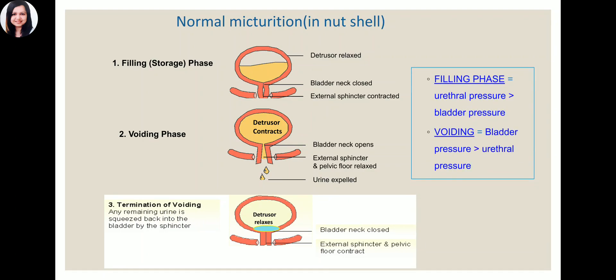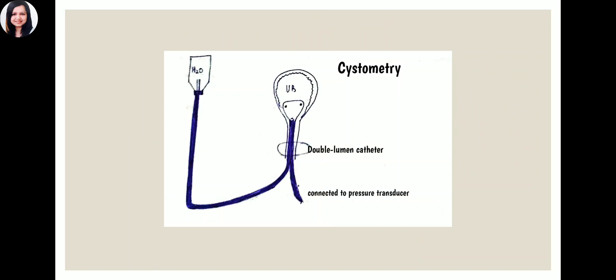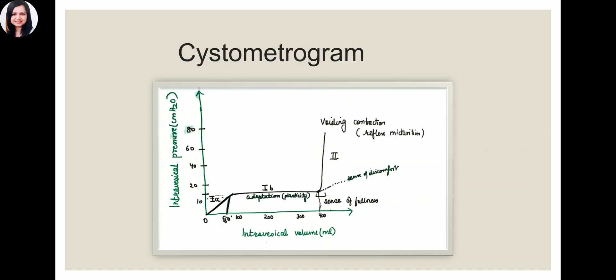During filling, urethral pressure is greater than bladder pressure; during voiding, bladder pressure exceeds urethral pressure. The relationship between intravesical pressure and volume is recorded by cystometry, a technique used in patients with stress incontinence or micturition problems. The method involves inserting a double-lumen catheter into the bladder — one lumen is used to instill fluid in 50 ml increments, and the other is connected to a pressure transducer to record pressure changes.